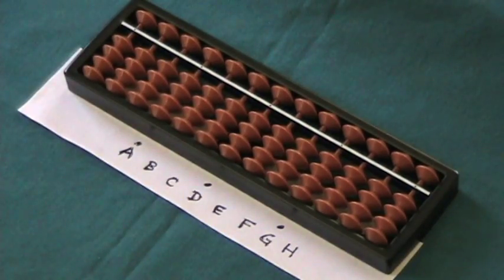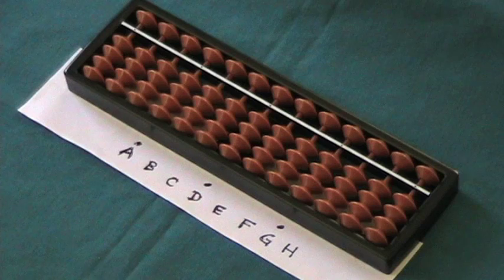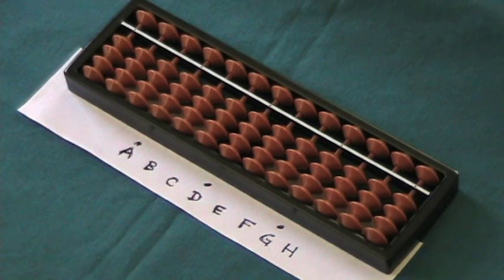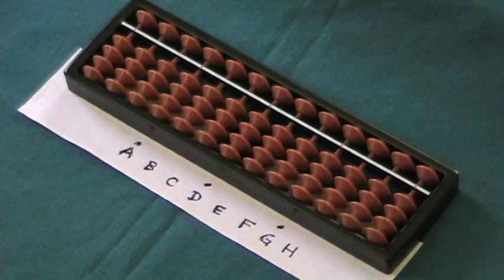Soroban Tutorial number 13. This is a simple case of multiplication with a two-digit number. Two-digit multiplier, one-digit multiplicand.